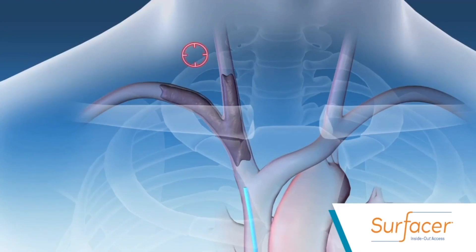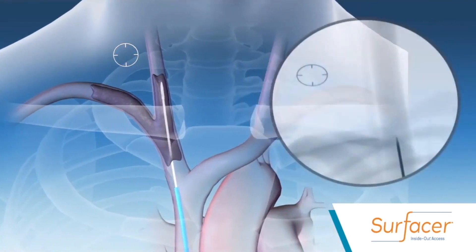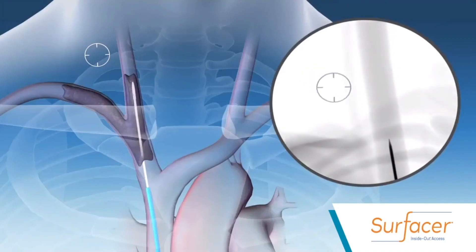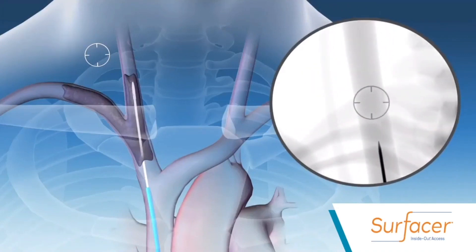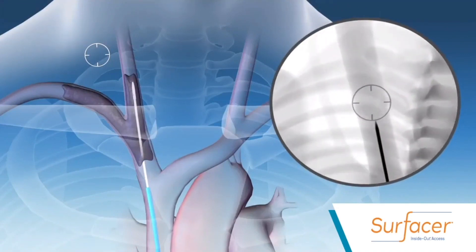After a target is placed on the exit area, the device is advanced into the obstruction. Fluoro is adjusted until the tip of the device is visible within the exit target.